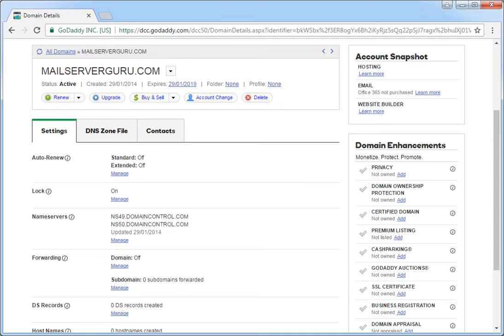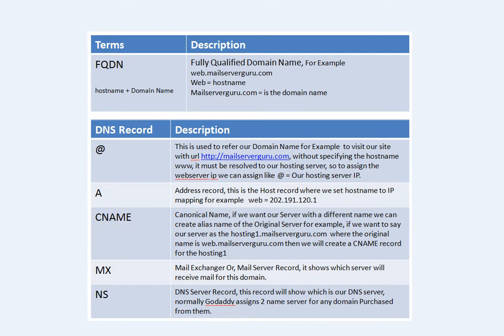Before that, let's discuss some basics regarding hostname or server name — how they are actually formed — and some DNS record types. Normally when we assign a hostname or computer name to our server, we use FQDN format. For example, if our web server name is web.mailserverguru.com, here 'web' is the actual hostname and 'mailserverguru.com' is the domain name. So FQDN is formed with the formula: hostname plus domain name.